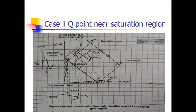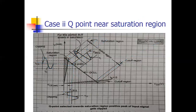If we place the Q point near the saturation region and draw the waveforms again, the negative part is fine but the positive peaks fall into the saturation region and get clipped. So placing the Q point near saturation causes the positive peak to be clipped in the output voltage and output current waveforms. Again, we do not get a perfect output.